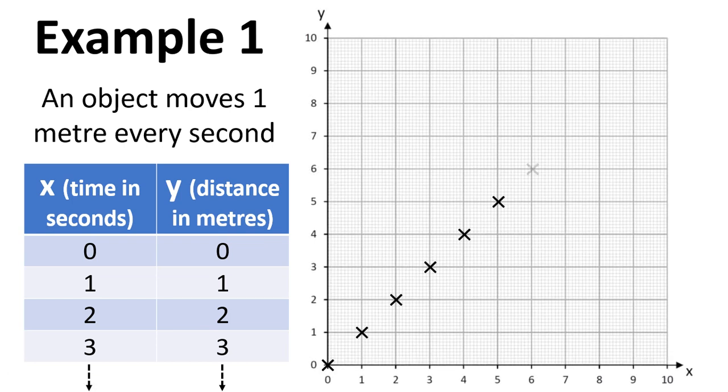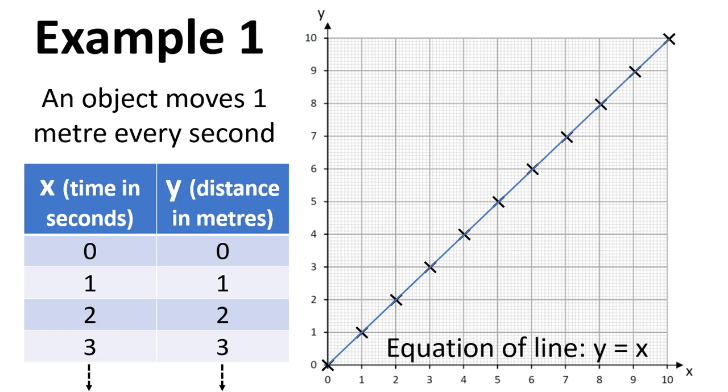Now we can plot this on a graph, and plot the points like this. Now we can draw a line of best fit through those points. And the equation in this case is just simply Y equals X. So the equation of that line is Y equals X.